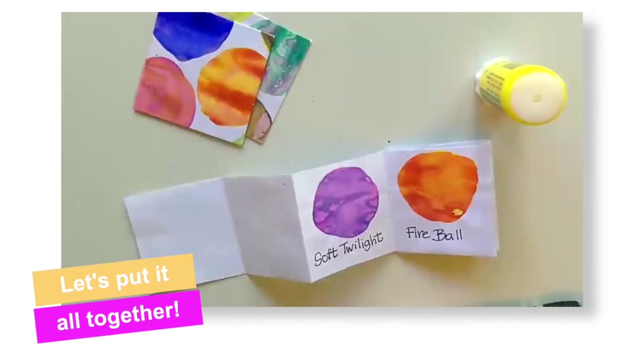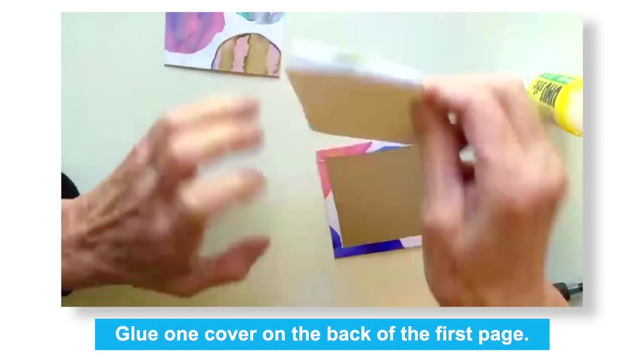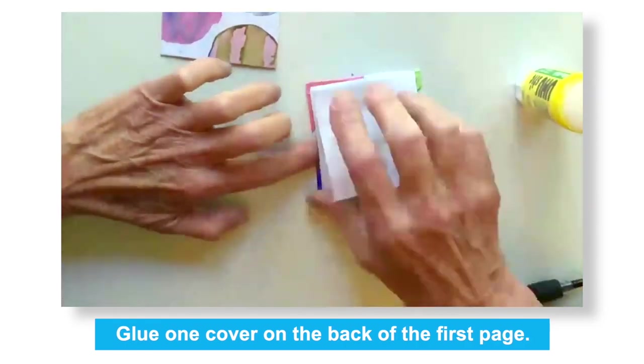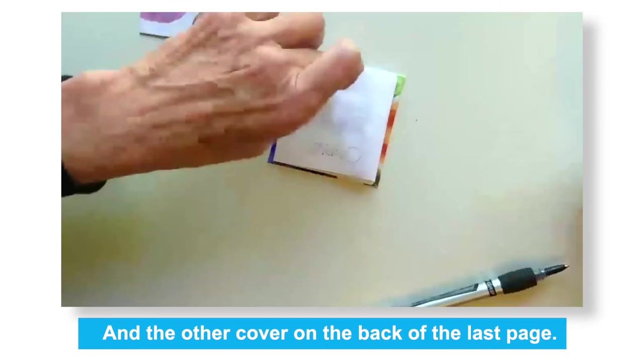All that's left to do is assemble our book and give it a title. To glue the covers on, we'll fold our book up and then glue one cover on the back of the first page and the other cover on the back of the last page.